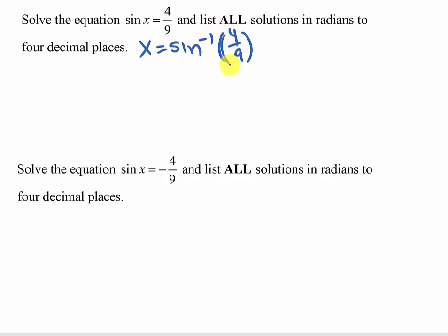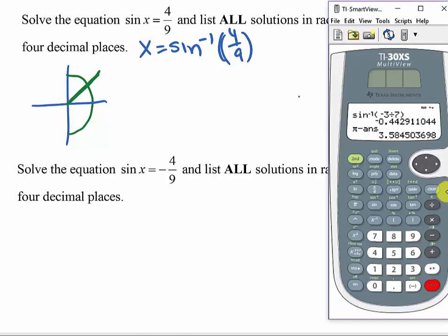Now I can use my calculator and get one solution because I know that the calculator is going to give me answers between -π/2 and π/2 for inverse sine. Since this is positive, it's going to give me an angle in quadrant one. So let's go ahead and start there.